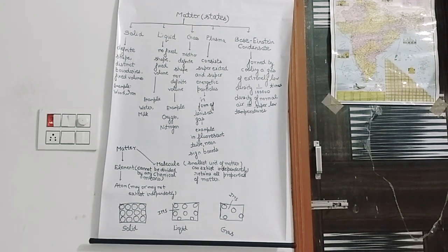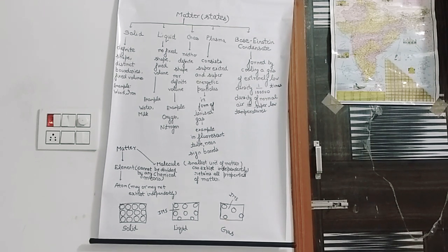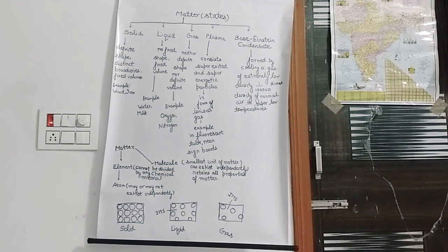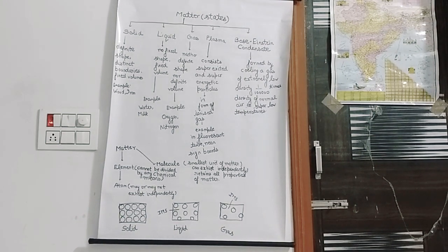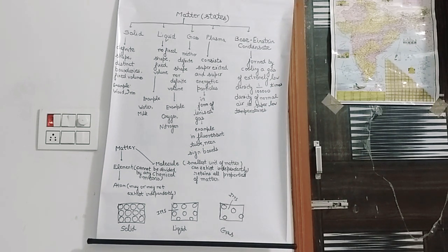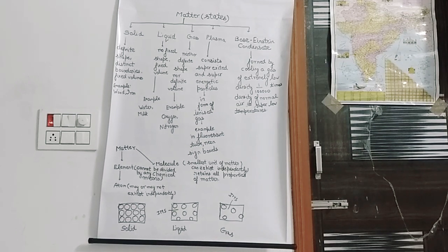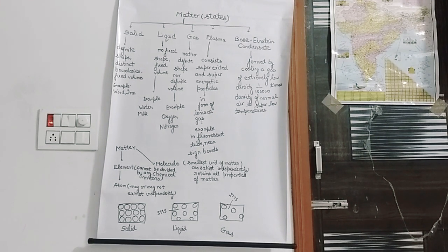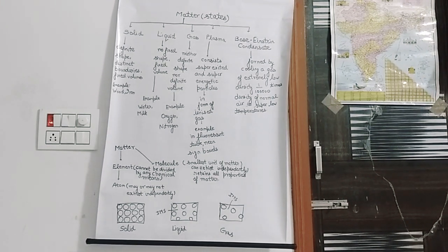Plasma particles are in the form of ionized gas. An ion is formed whenever an atom loses or gains one electron, meaning it will have either a plus charge or a minus charge. You see plasma in fluorescent tubes and in neon sign bolts.